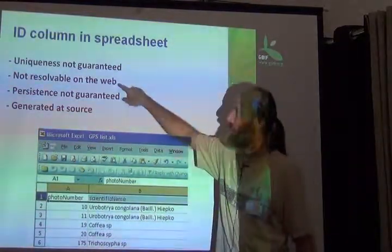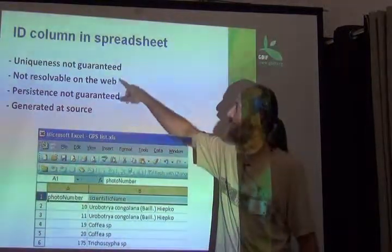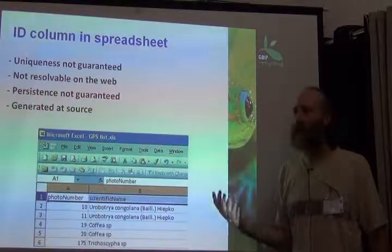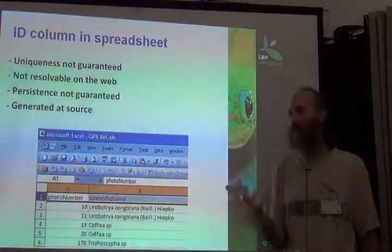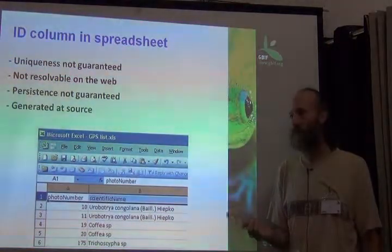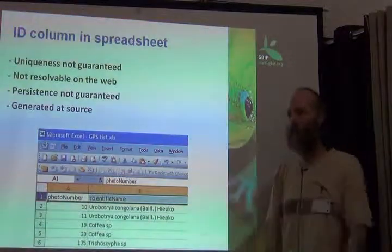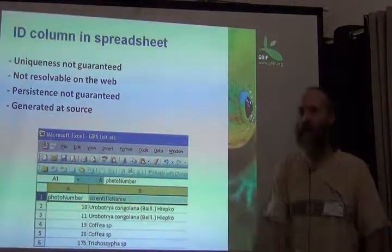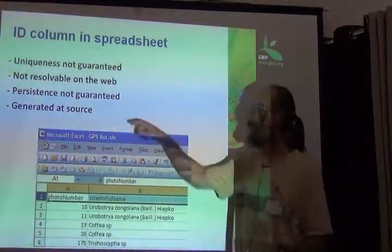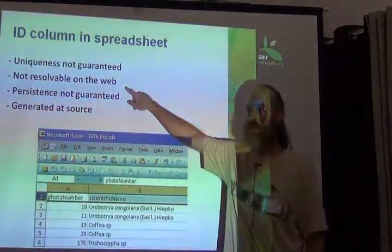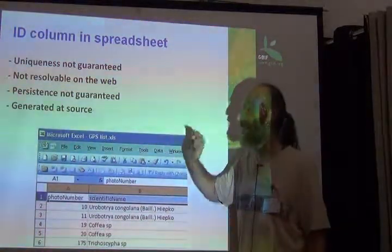The other important thing is that we're going to share our information on the web. We'd like our identifiers to be able to take us somewhere and tell us something about the object they describe. For example, a URL — you put it in your browser and it opens a page or downloads a file. It does something. It's active. It's resolvable. That's what it means to be resolvable: the identifier does something when you go out on the web.